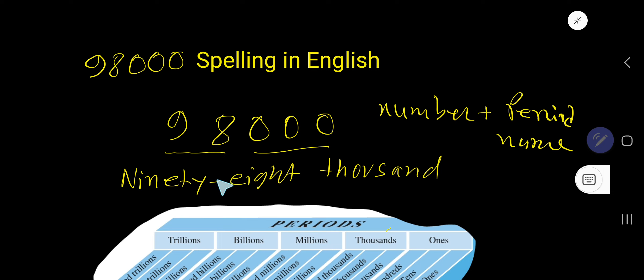Numbers from 21 to 99, we have to use a hyphen - ninety-eight thousand.